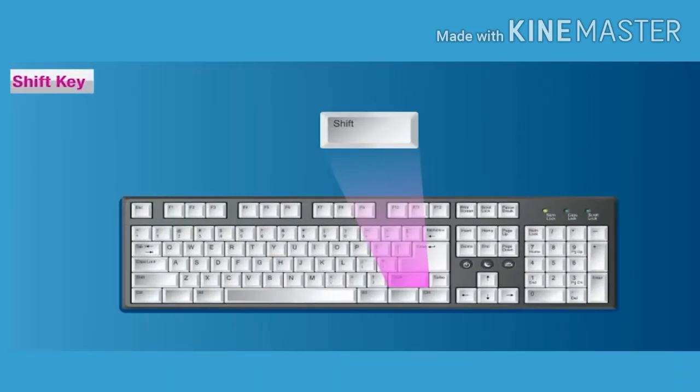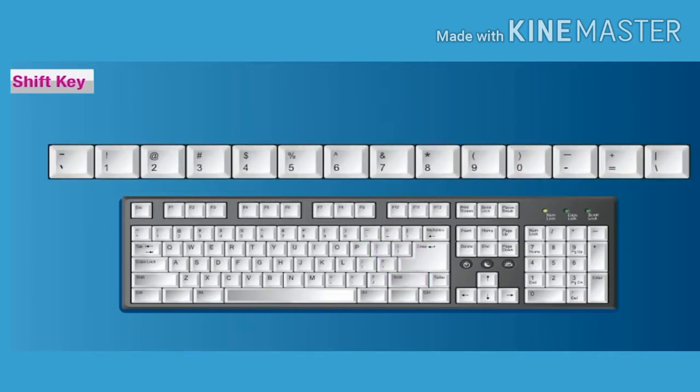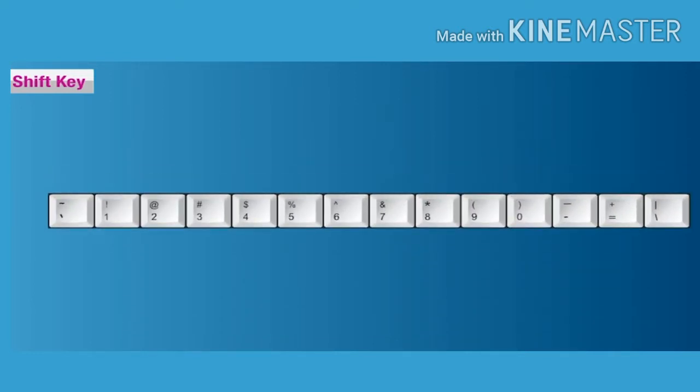The shift key is used in combination with other keys. Any letter typed with shift key pressed displays capital letter when caps lock is off. Some keys have two symbols written on them. When you want to type the upper symbol of any key, use the shift key.